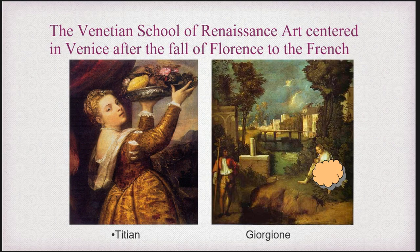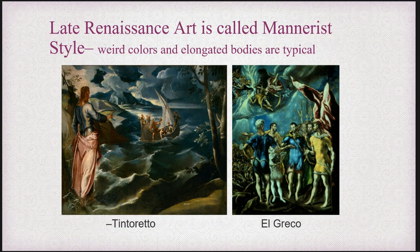A Venetian School of Renaissance Art centers in Venice after the fall of Florence to the French. We see some other paintings here. Late Renaissance Art is often called Mannerist style. You have weird colors and elongated bodies that are typical. The one on the right seems to be more of a representation of that — the weird colors are things you wouldn't have seen in everyday life, and you can see that on the left as well.